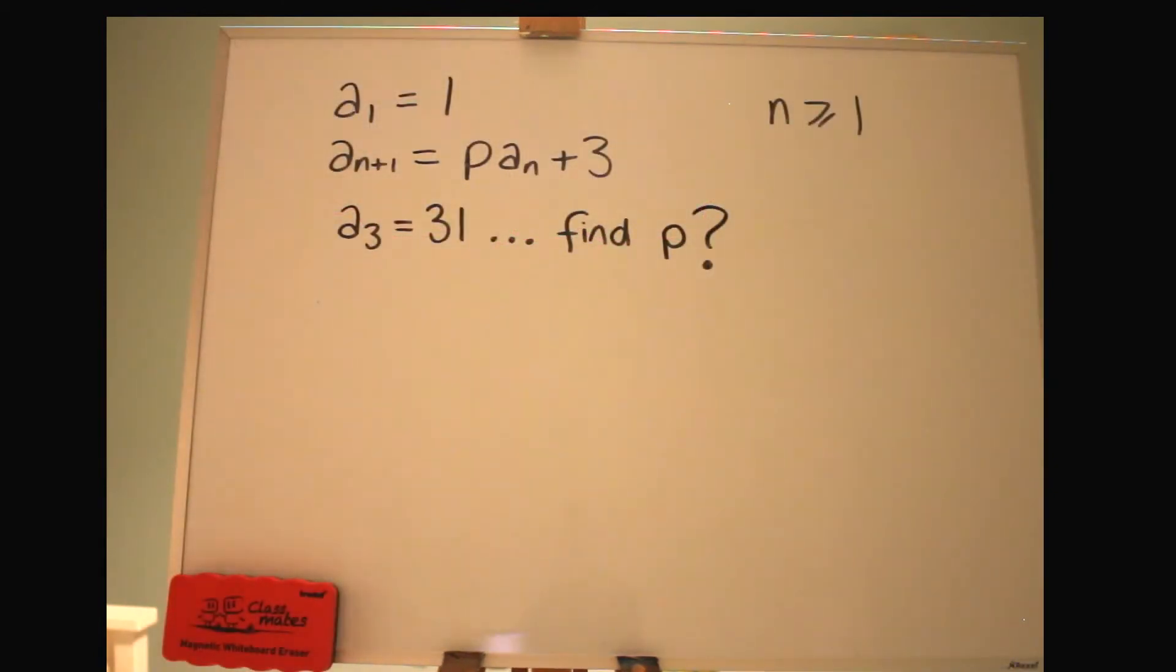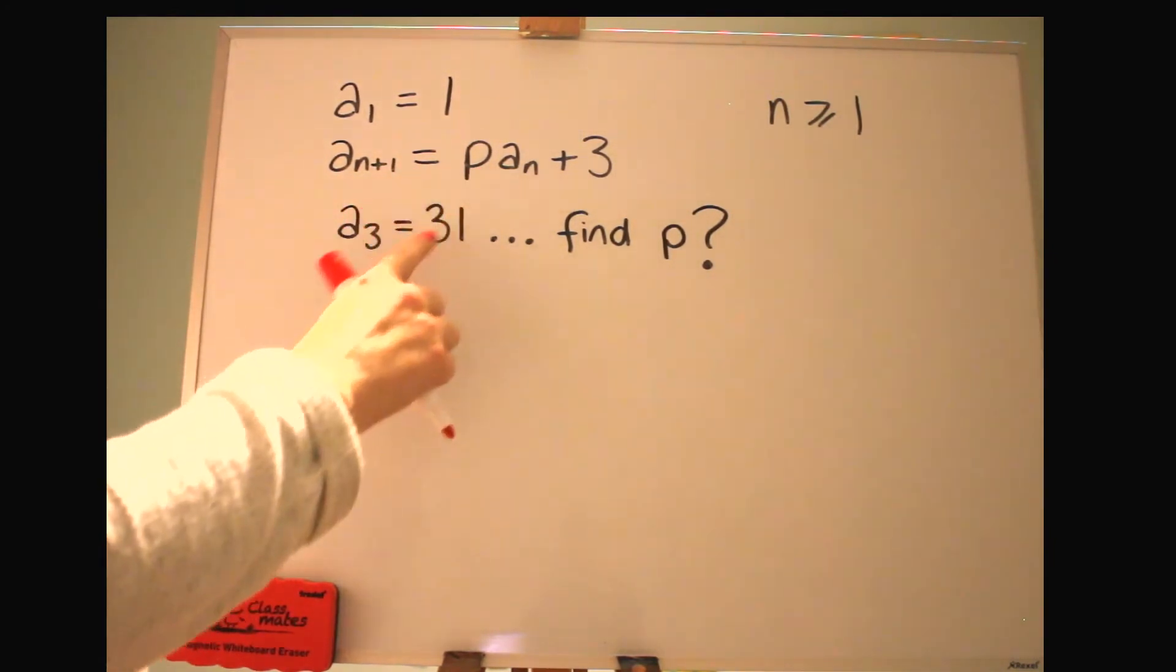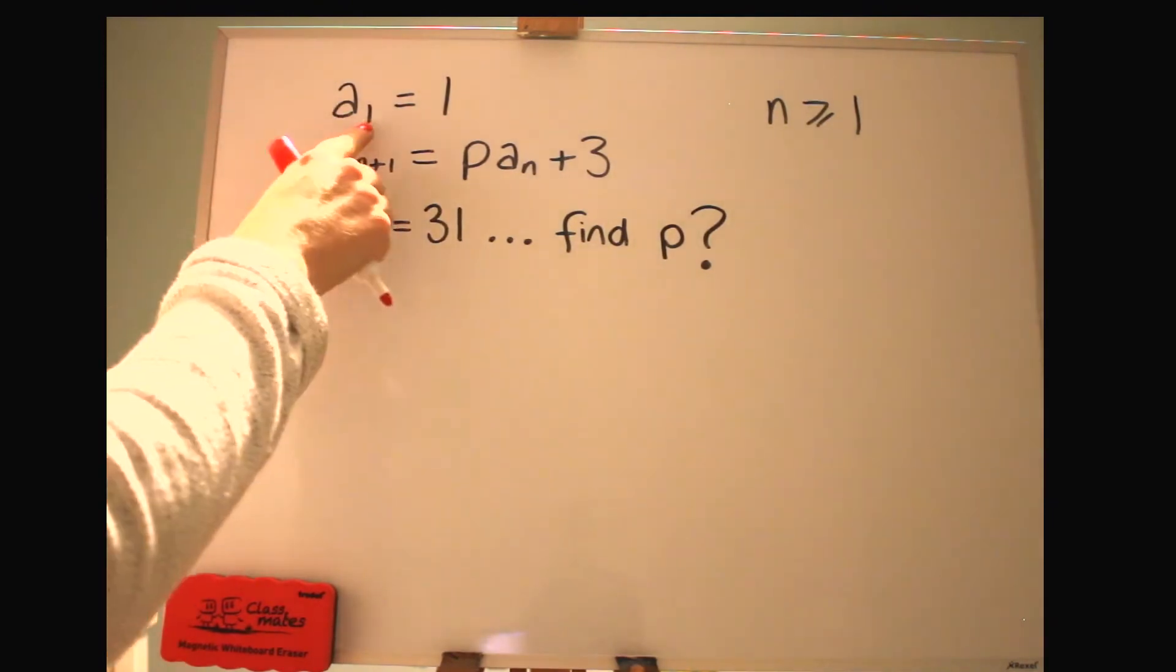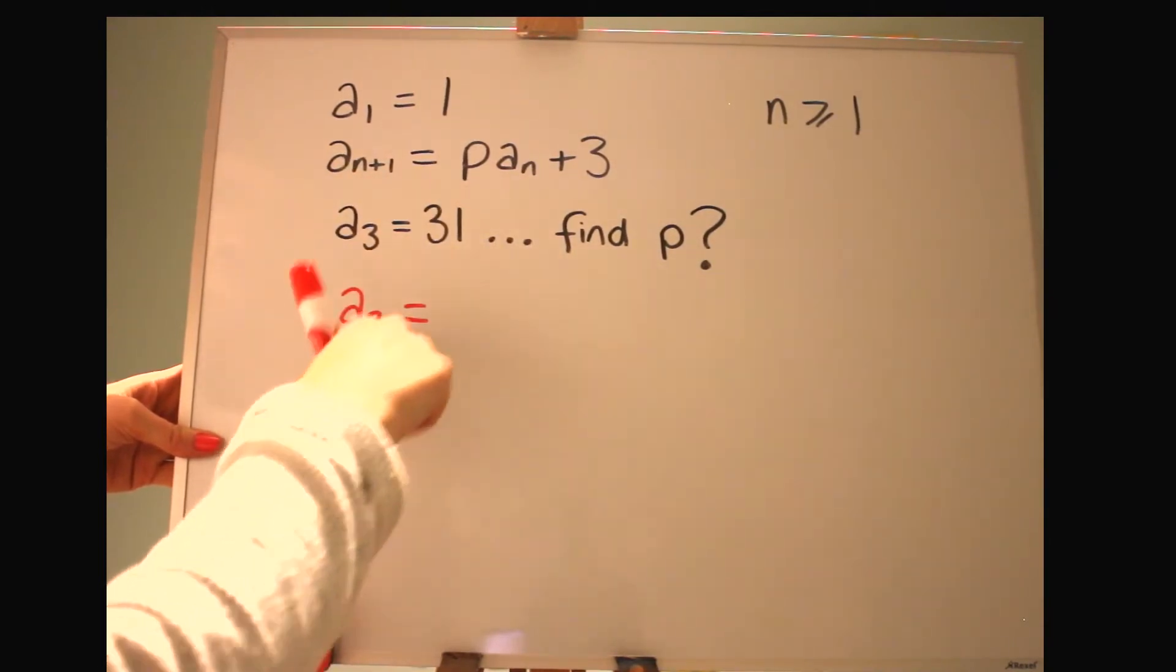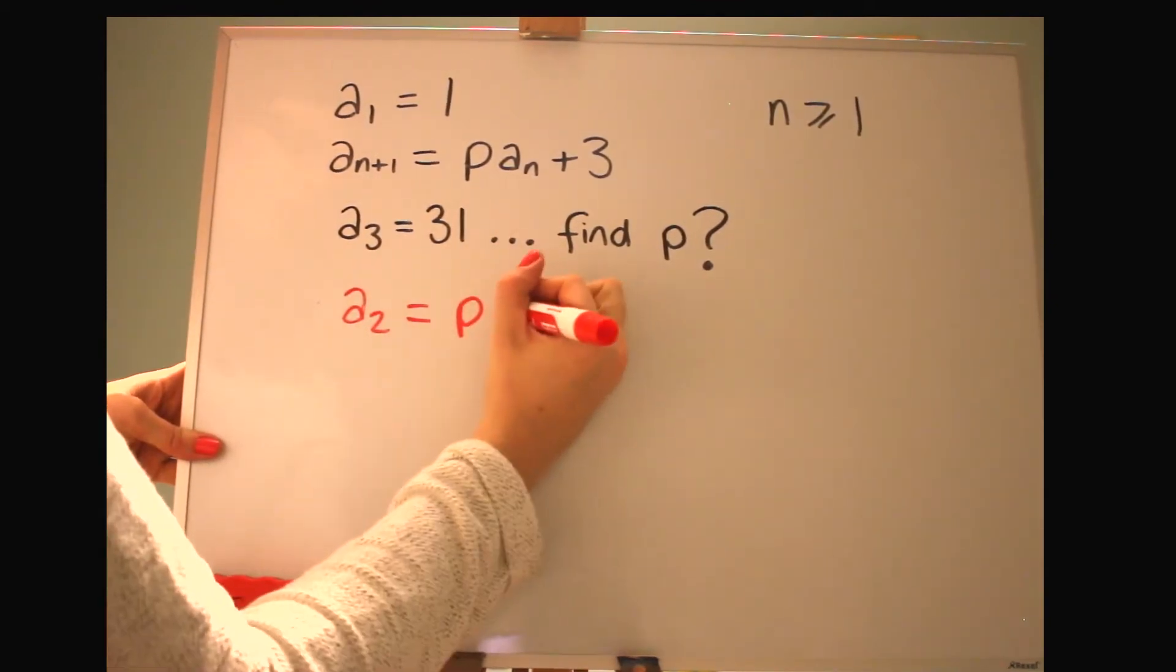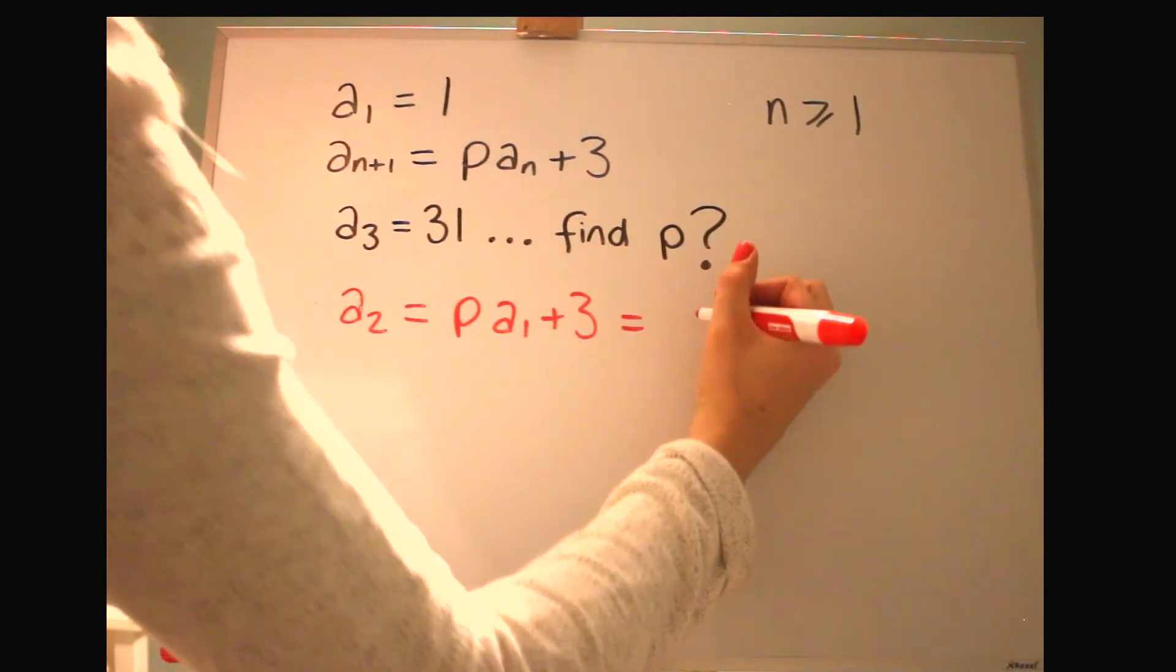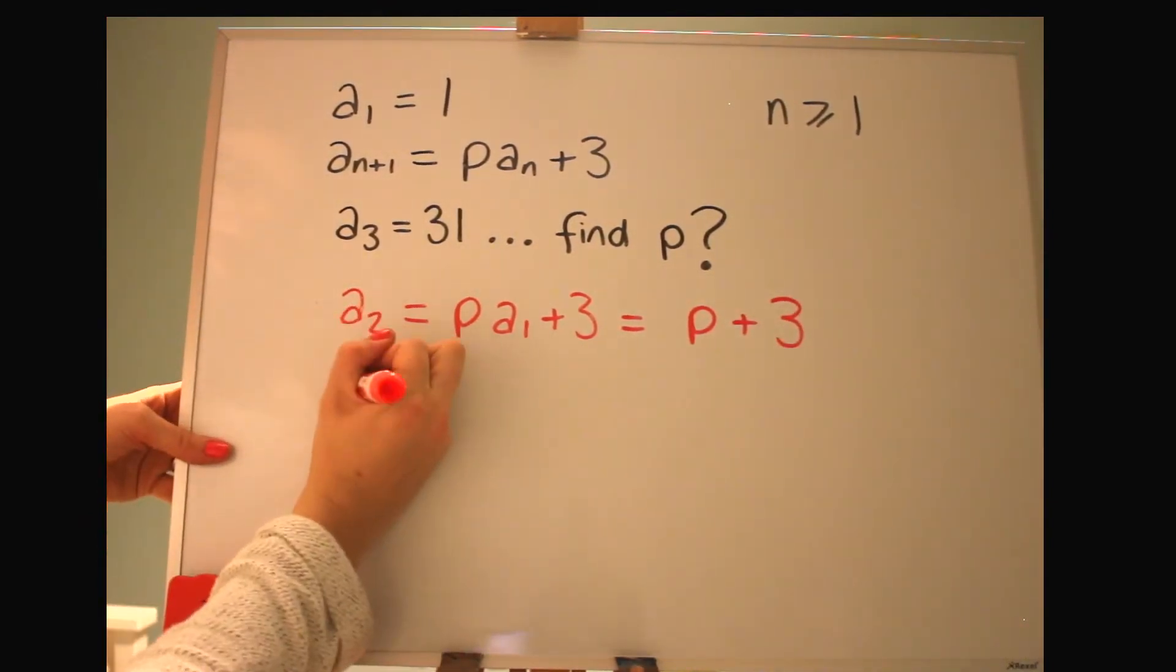Here we've got more of an exam style question. These could be very high end GCSE or A level standard. So here we've got a recurrence relation and it's got an unknown letter P in it. And we're given the third term is 31 and asked to find P. So we've got a1. Let's find a2, and then from there we can find a3. So n here can be 1, so that n plus 1 is 2. So we're going to have P times a1 plus 3, and I'll just carry on. P times 1 is just P.